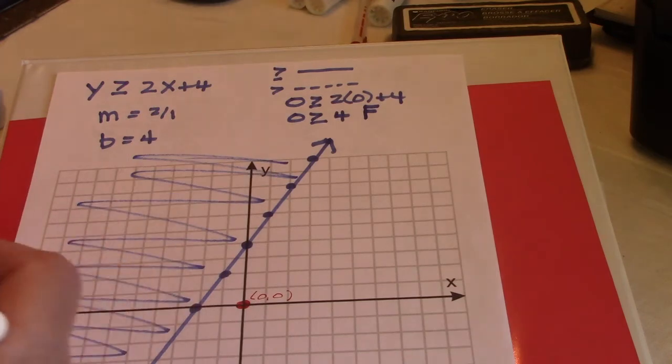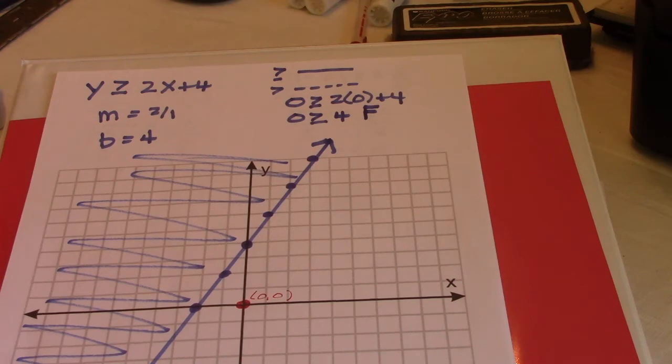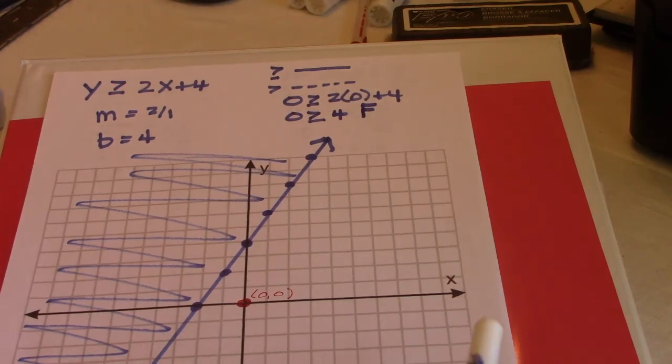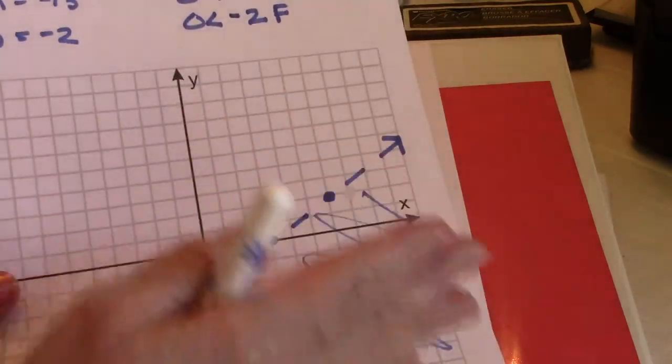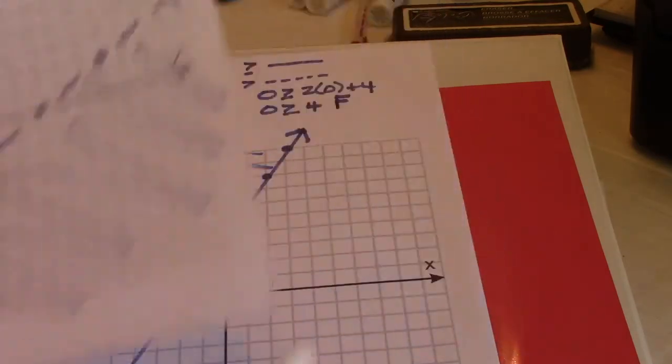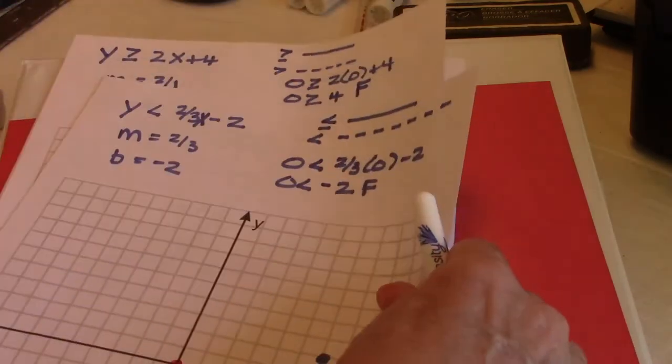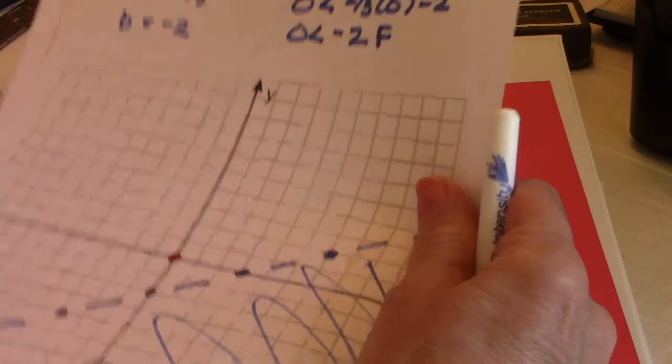So I shade the other side. Now if you notice in our notes, I told you that usually if it's greater than, it's going to graph more upward. If it's less than, it's usually going to graph more downward. That's another clue. Now let me just show you one more because it's just a little different.